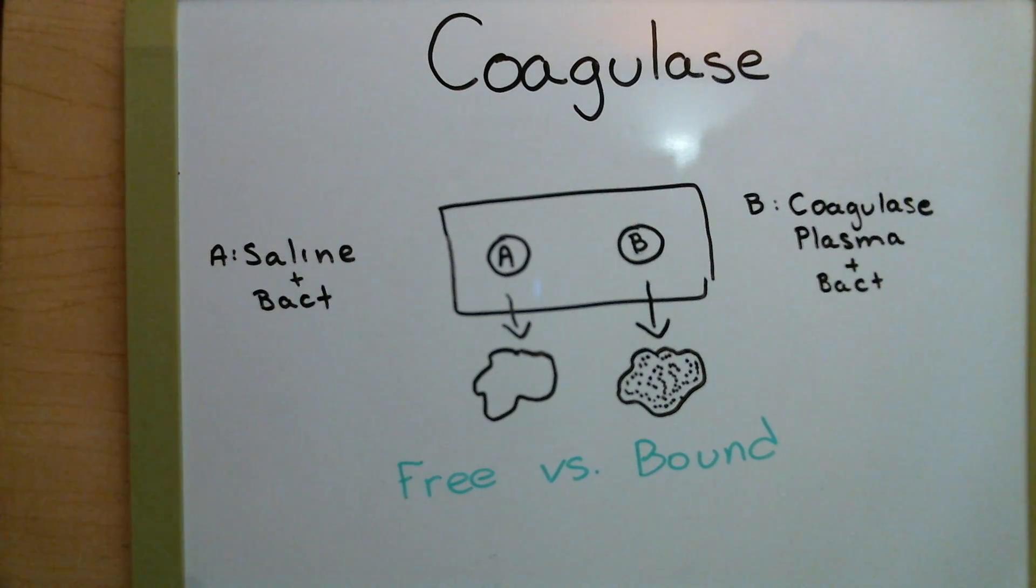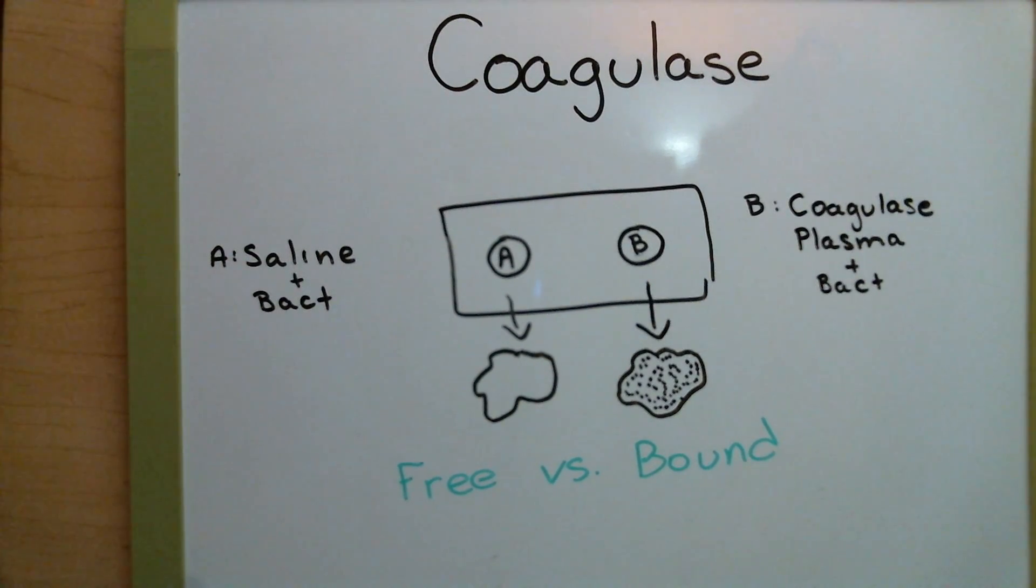And as I said before, there is a test tube version of this. I didn't do it when I took the class, but if you do have to do it, it's the exact opposite of the gelatin test, where you start out with the liquid. And if you get a solid at the end of the result, then that's a positive result. And there's a difference. When you figure out the difference between free and bound coagulase, you can tell me which one of these, either the slide or the test tube, test for free versus bound coagulase.